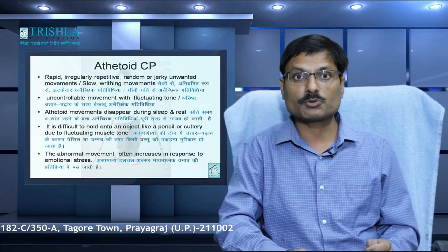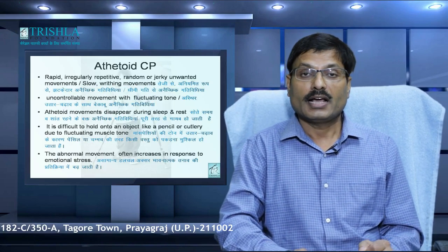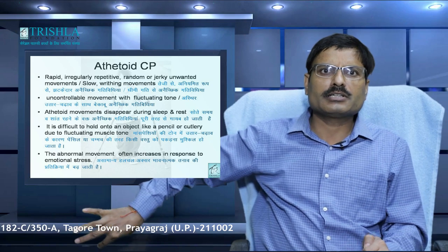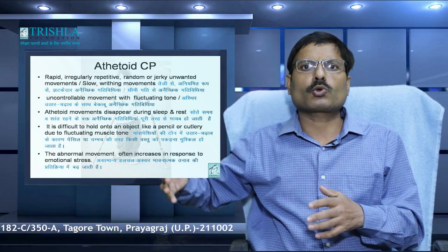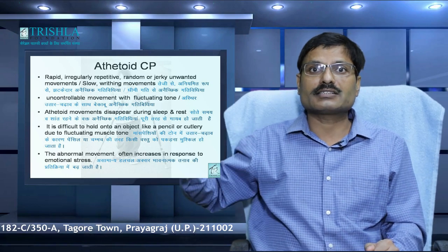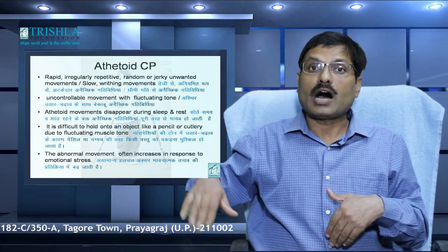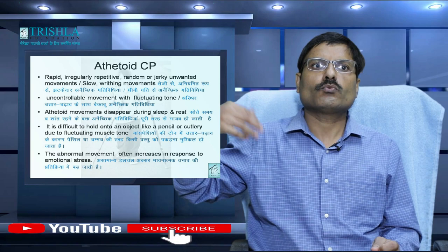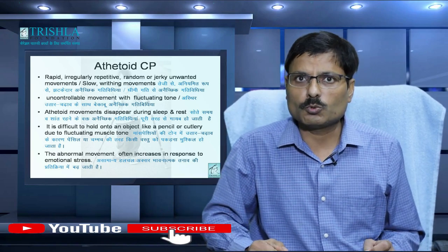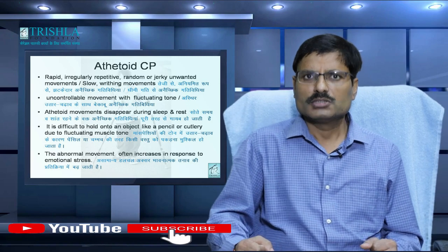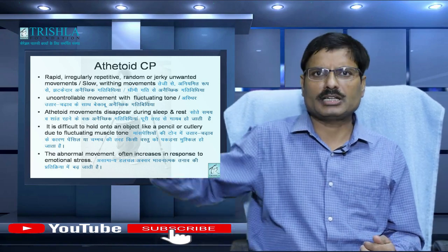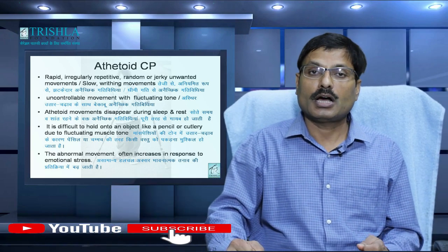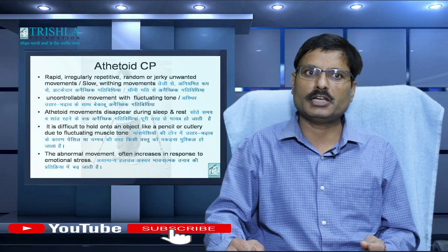Athetoid cerebral palsy involves rapid, involuntary, irregularly random, jerky, unwanted movements, and sometimes slow writhing movements in the body. These writhing and repetitive jerky movements occur more during action, during anxiety, and during activities, with uncontrolled movements and fluctuating tone — sometimes the body is very loose, sometimes the tone is increased. Deep reflexes will not be increased — they will be normal. All these movements disappear during sleep.